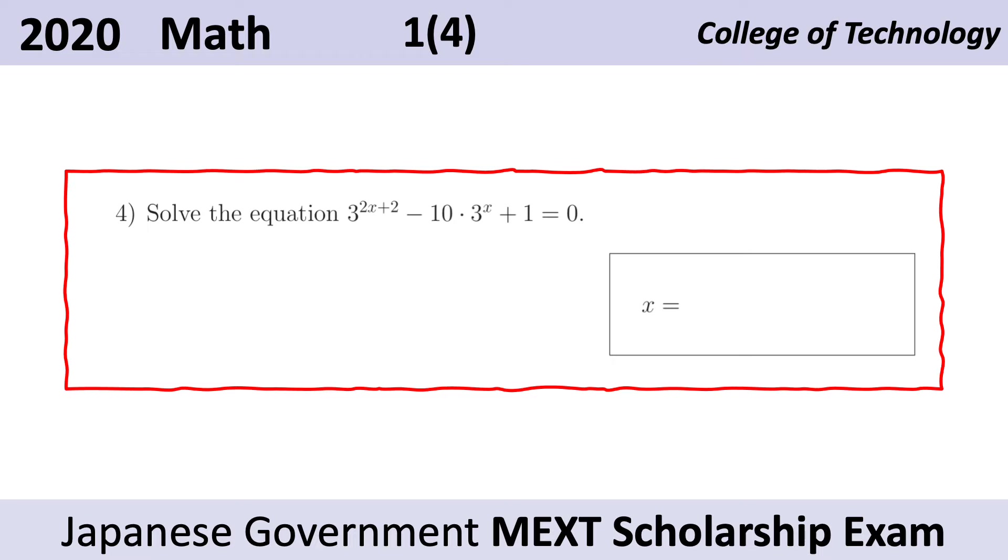This problem asks us to solve for x. In this equation, we have 3 raised to the 2x plus 2 minus 10 times 3 to the x plus 1 equals 0.